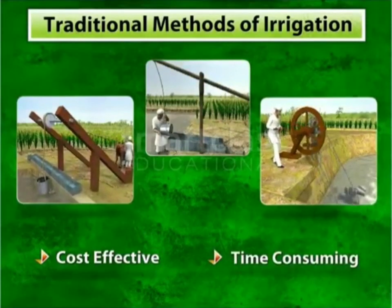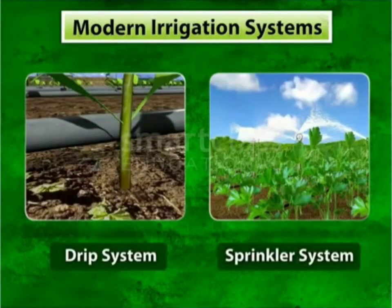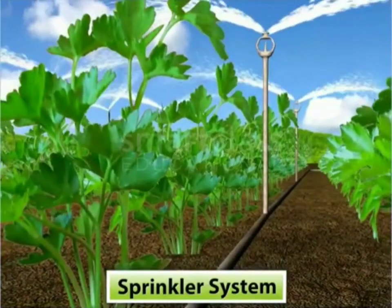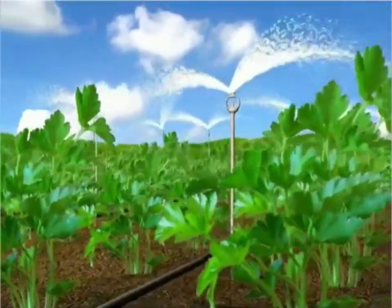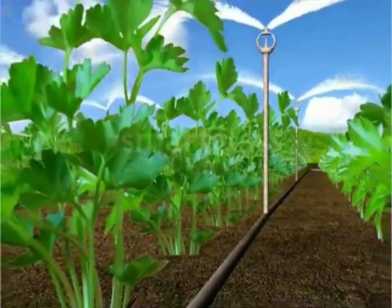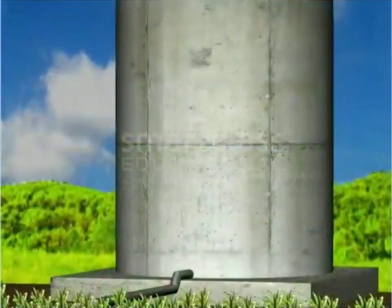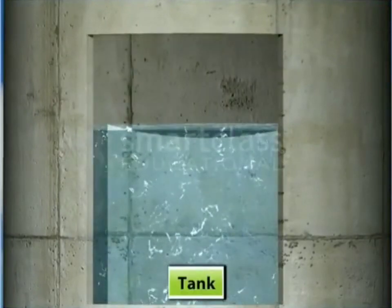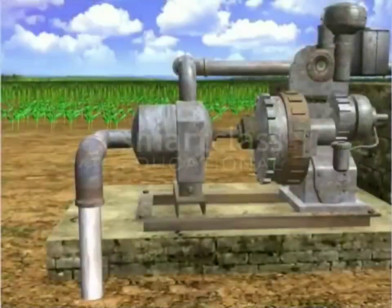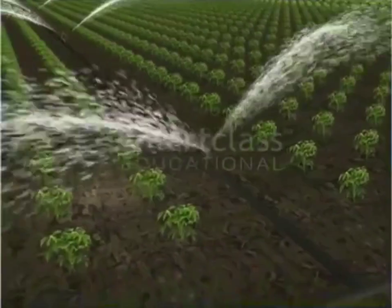These traditional methods are very cost effective but consume a lot of time, which is why we now use modern methods of irrigation: the drip system and sprinkler system. In the sprinkler system, there is a vertical pipe on which a rotating nozzle is connected, and through the rotating nozzle the water is sprinkled. The vertical pipe is connected to a large horizontal pipe, which is connected to a water tank. The tank pumps water with the help of a pump that can be operated through electricity or diesel. The rotating nozzle sprinkles the water in a circular way — this is called sprinkler irrigation.